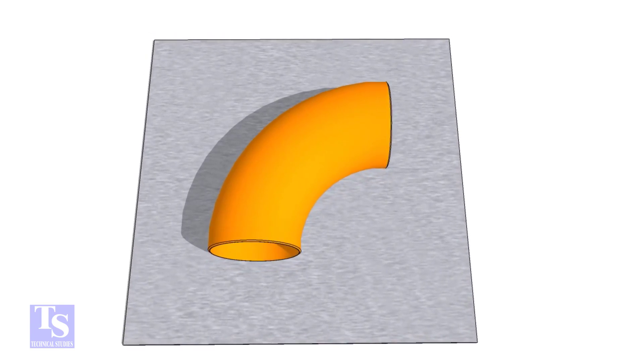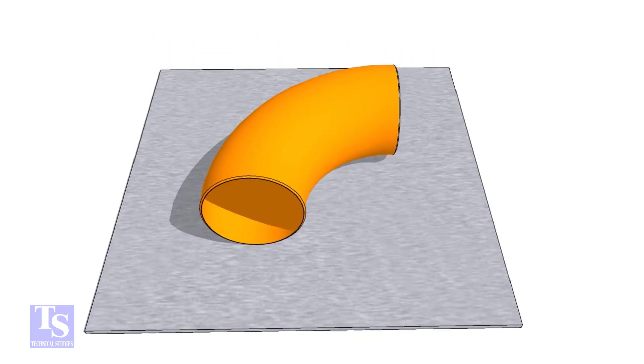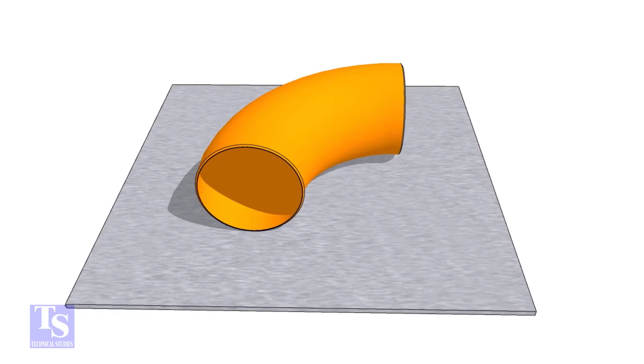First of all, choose a leveled plate and put the elbow on it. Check the outer diameter of the elbow.